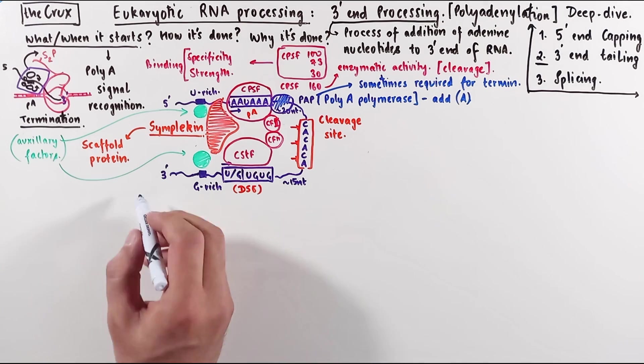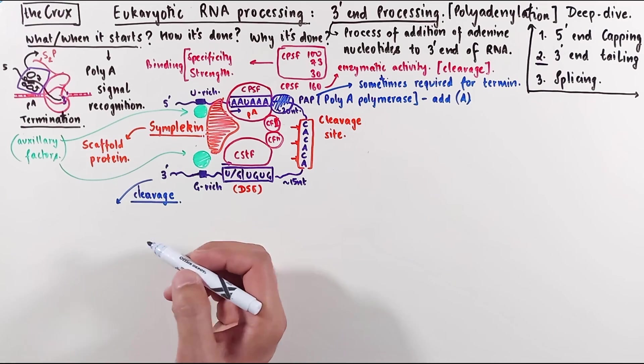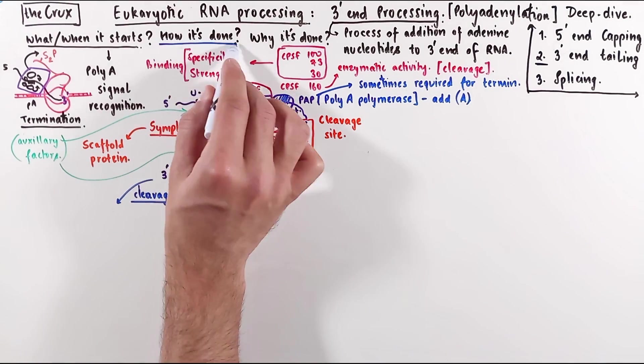After the RNA is cleaved, it starts the process of 3' end tailing. So now that we understand what and when it starts, let's see how it is done.